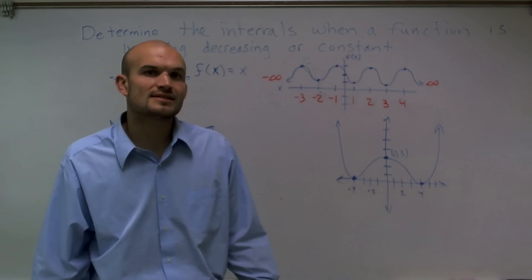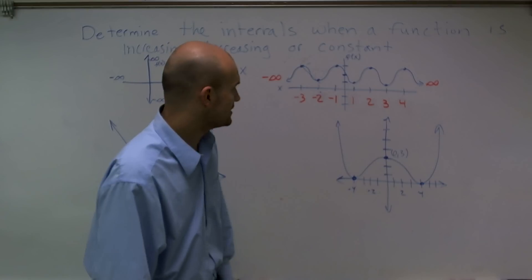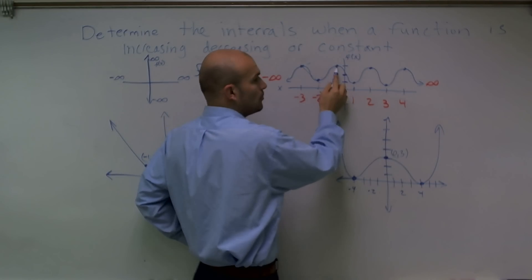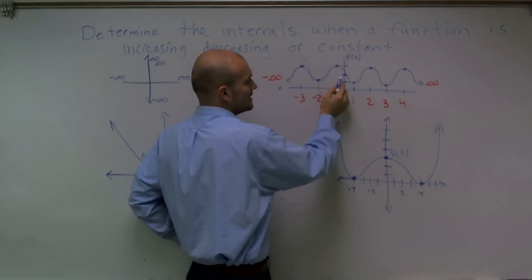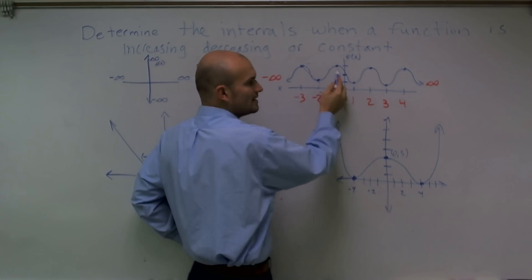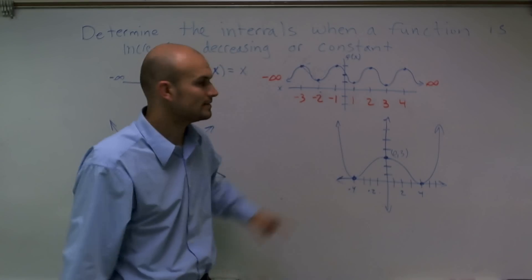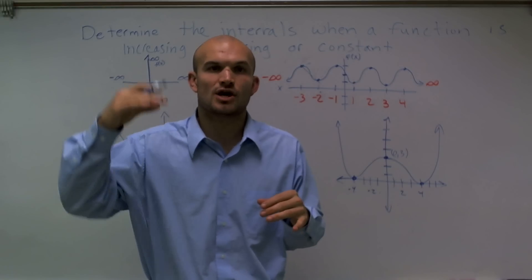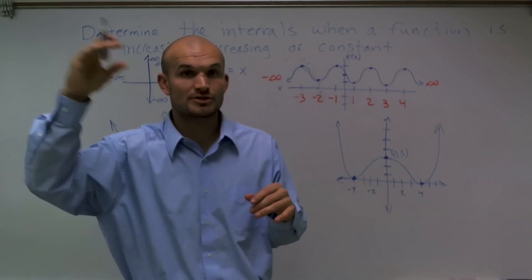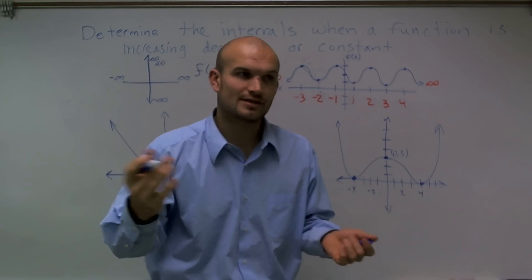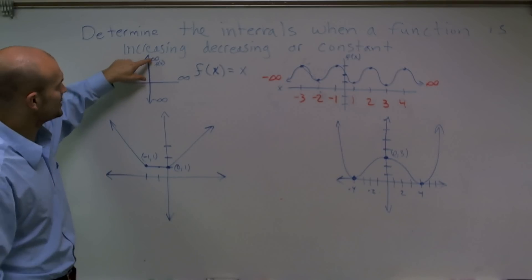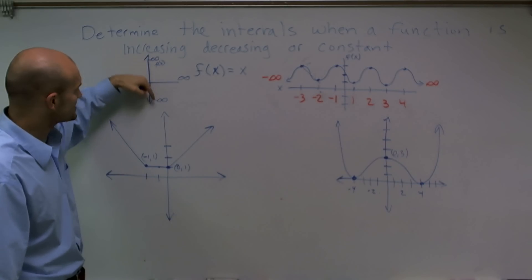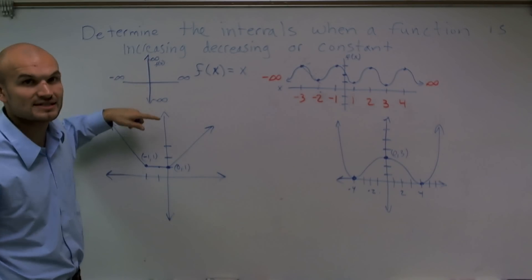Now let's look at when the graph has decreased. Between negative 1 and 1, at negative 1, the output value of this function is at 3, but at 1 it has decreased down to 1. So whenever the output has gone from a larger number to a lower number, we call it decreased. We can also say as it's going up to infinity, it's increasing, and as a function is going down, we say it's decreasing.